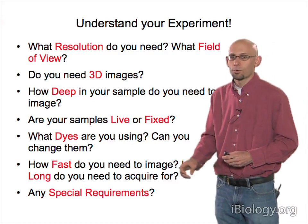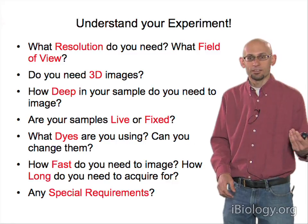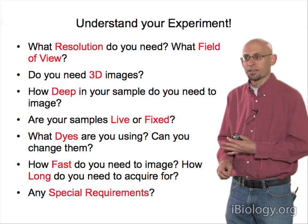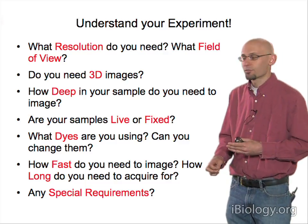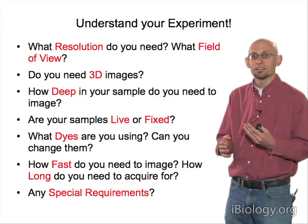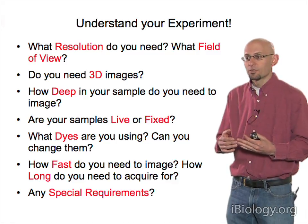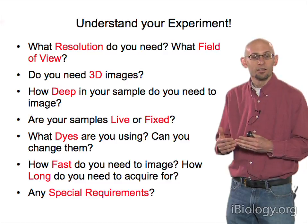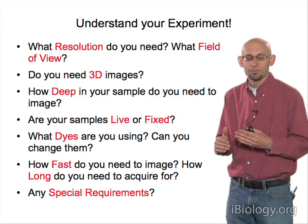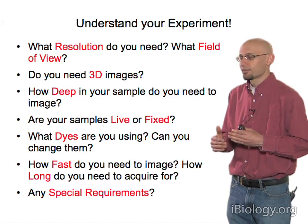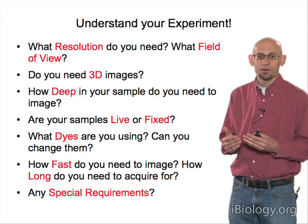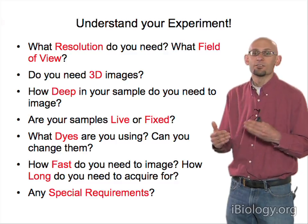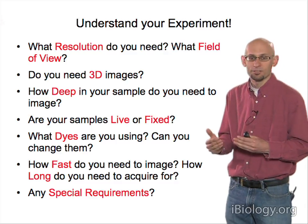A critical question is what dyes are you using. Are they fluorescent proteins or antibodies? Can you change them? If you're doing immunofluorescence, it may be easy to swap dyes if the microscope lacks a particular laser line. But if you have tissues from a transgenic mouse expressing GFP and Cherry, it may take a lot of work to change those dyes, and you'll need to find a microscope that can image them.